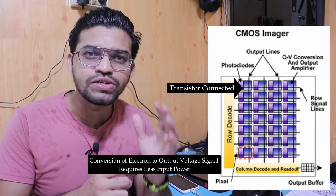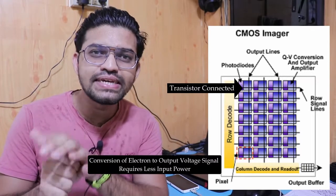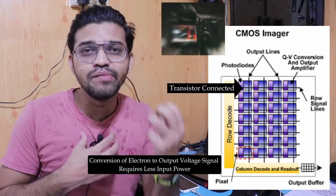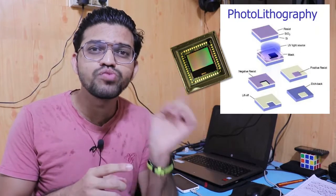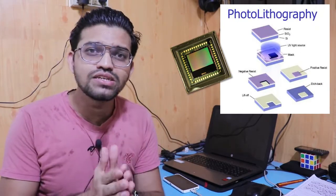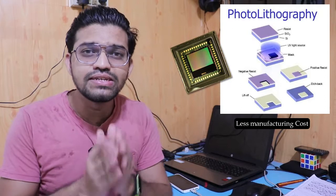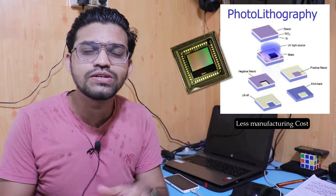The small transistors connected to each pixel convert the electrical charge into output voltage signals, which is useful for digital processing, ultimately producing a clear image on screen. This type of image sensor is manufactured by a process known as photolithography — the same process used to manufacture microprocessors. This process is very inexpensive, which is why manufacturing costs are low and most manufacturers prefer CMOS sensors over CCD.